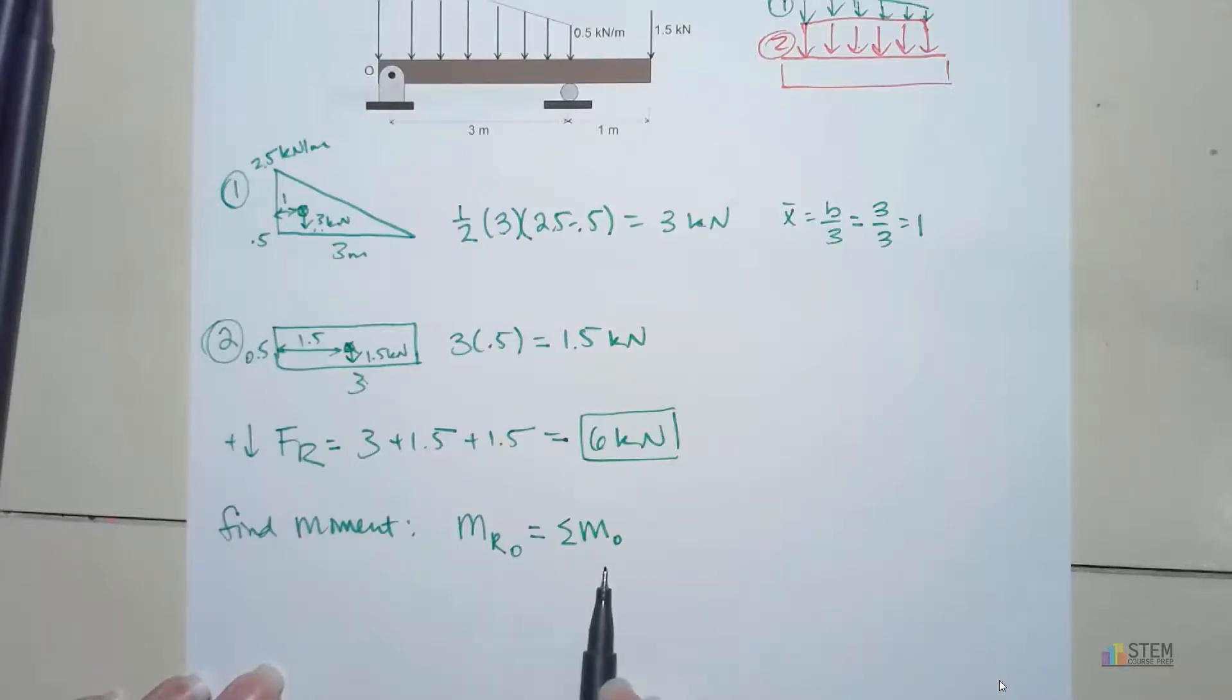So kind of similar to what we did with equivalent systems. When we took the big system and we reduced it down to one force, same concept here. Find the moment due to the resultant about a point and then set it equal to the sum of all of the moments created by the individual forces on your original system, because this will guarantee that we have the same rotation even though we only have the one force now.